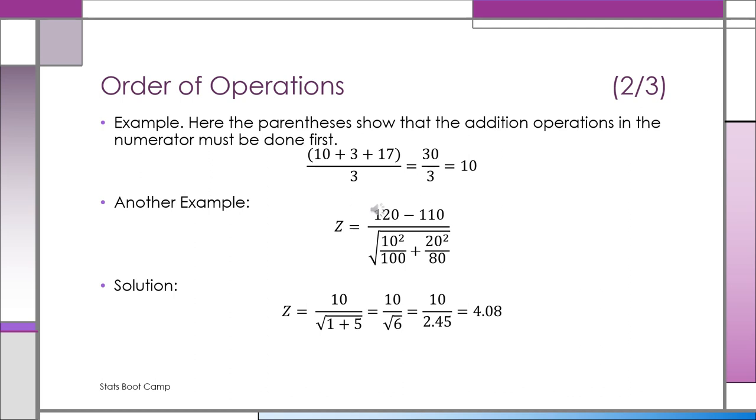20 squared, we do the 20 squared and we divide that by 80. We end up with 5. Finally, 1 plus 5 is 6. We put that under the square root. Now we can do the square root. The square root of 6 is 2.45. Now we can finally do the original fraction. Z equals 10 over 2.45, and it's equal to 4.08.